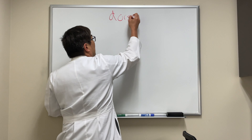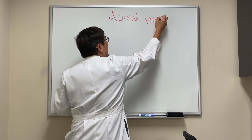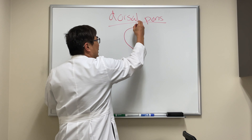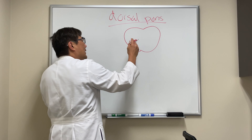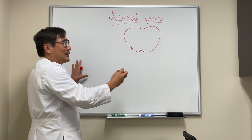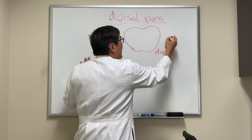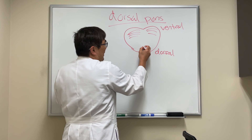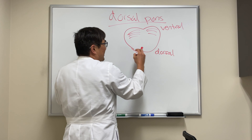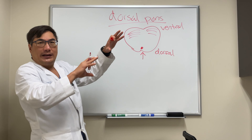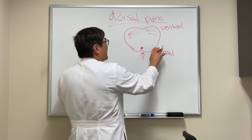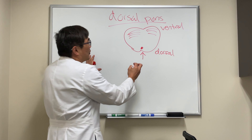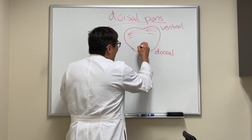Today we're going to be talking about the dorsal pons. You're very familiar with the dorsal midbrain syndrome — you can watch that video on the parinaud dorsal midbrain syndrome. The pons is kind of shaped like an apple and it's got a dorsal and a ventral, just like in the dorsal and ventral midbrain. The part that comes to us in the pontine syndromes is usually the dorsal pons. As opposed to the midbrain, where there's a tectum, tegmentum, and basis, we just have the dorsal pons, mid pons, and ventral pons, as well as medial and lateral pons.